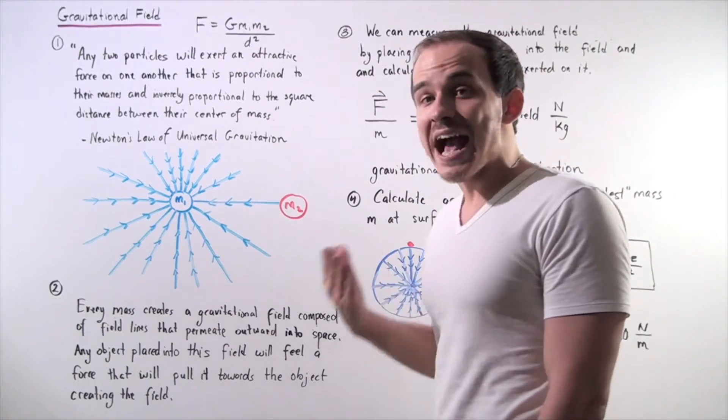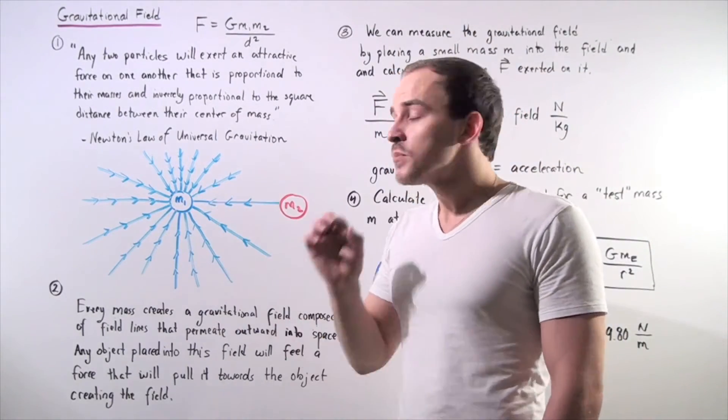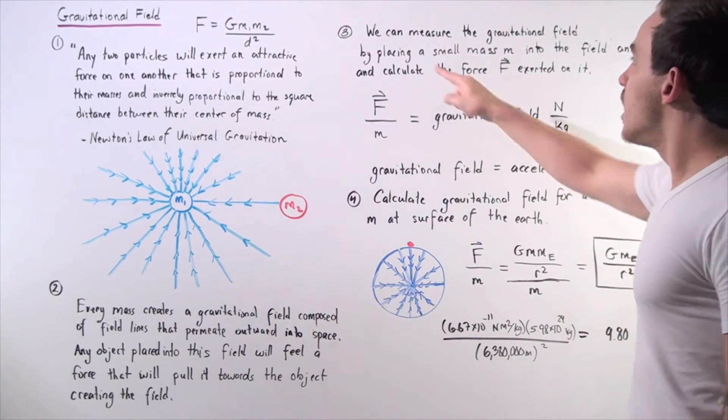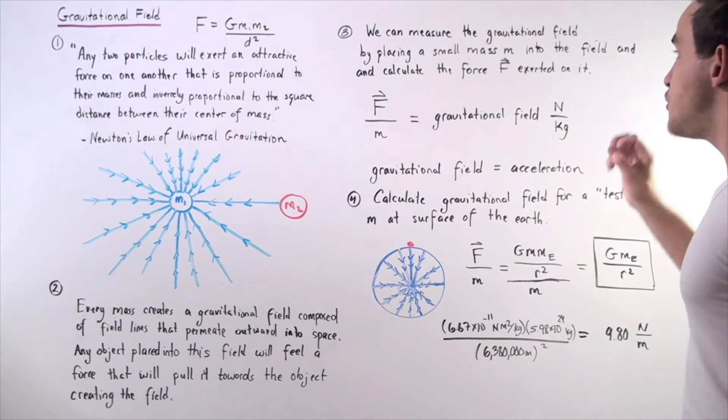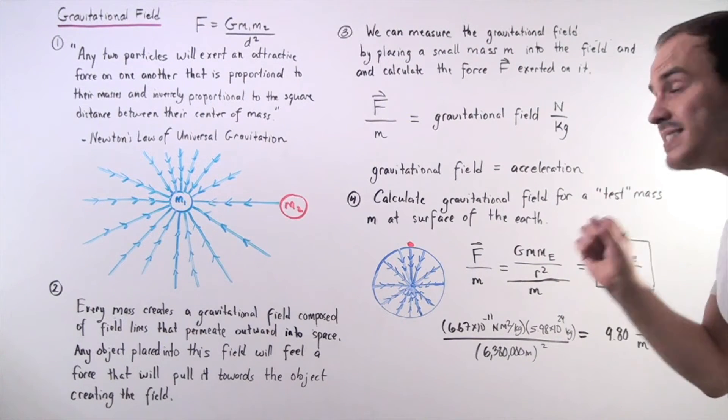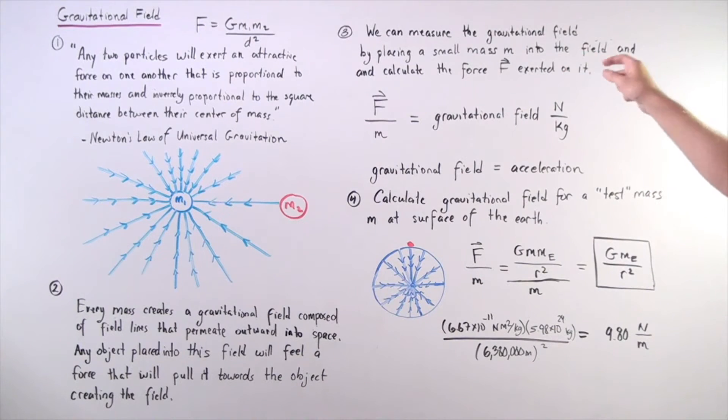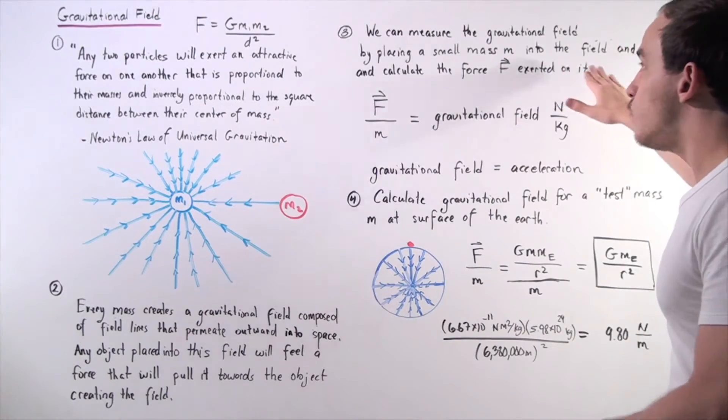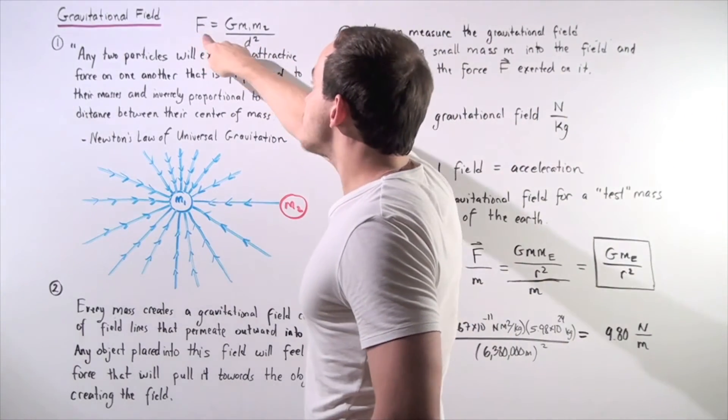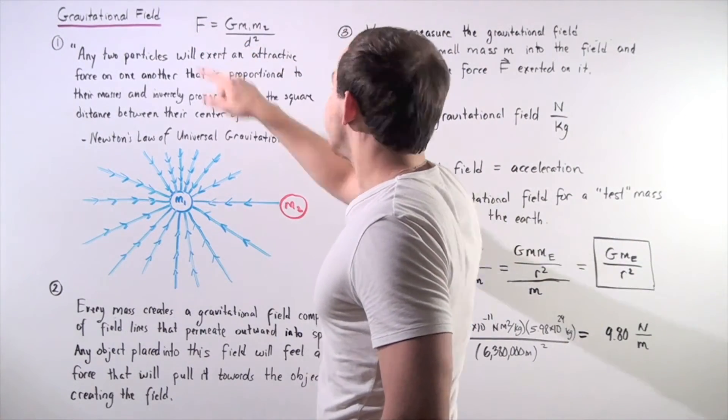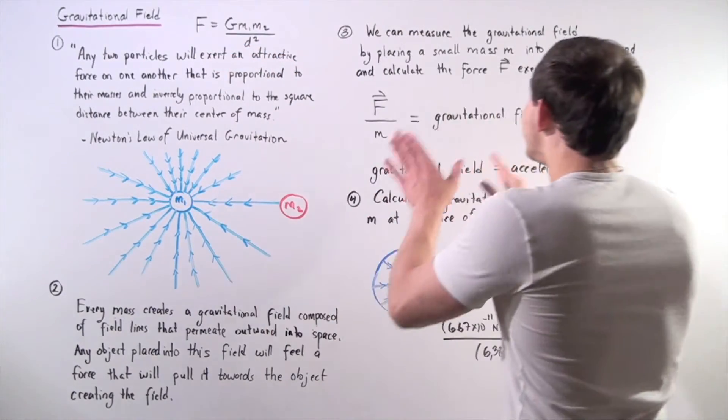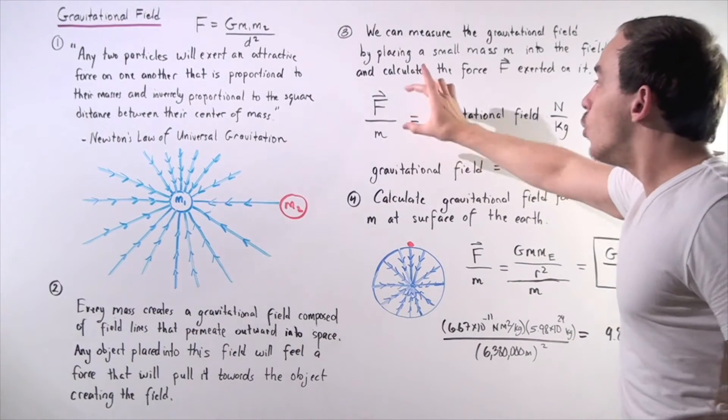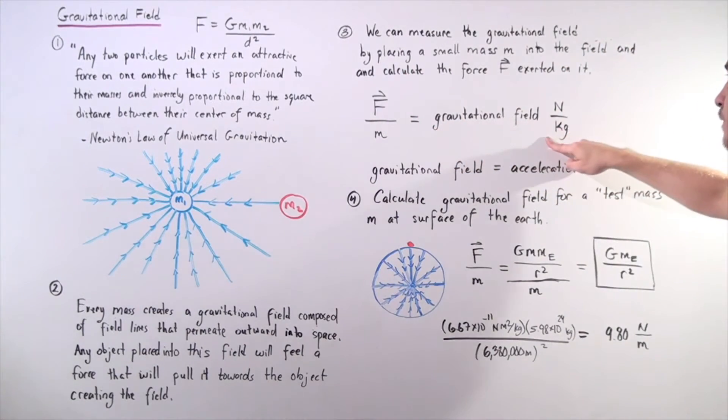Now, how exactly do we calculate the magnitude of the gravitational field? Well, let's look at part three. We can measure the gravitational field by placing a small test mass, M, into the field and calculate the force F exerted on it. So, if we calculate the force exerted on our object and divide that force by the test mass, by the mass of our test mass M, we get the value of the gravitational field.